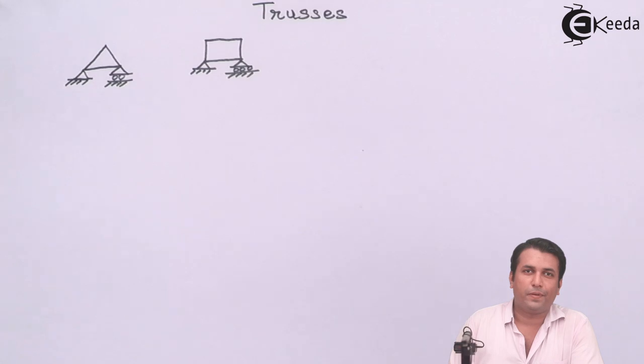For example, the bridge design is a form of truss. The electrical transmission lines, even that is a kind of truss. So these are regular, very common examples of trusses.